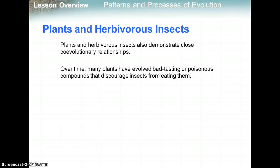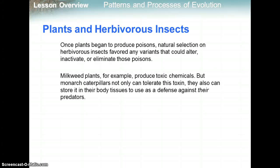Plants and herbivorous insects also demonstrate close coevolution. Many plants evolved bad-tasting or poisonous compounds to discourage insects from eating them. Once plants began producing poisons, natural selection on herbivorous insects favored any variants that could alter, inactivate, or eliminate those poisons. Milkweed plants, for example, are toxic — but monarch caterpillars not only tolerate the toxin, they store it in their bodies and use it as a defense against their own predators.